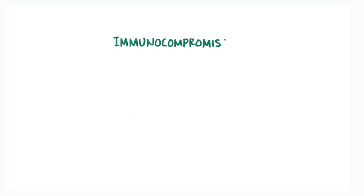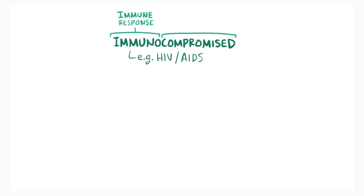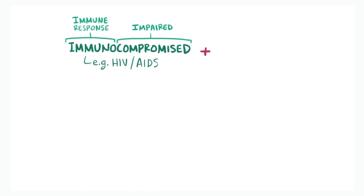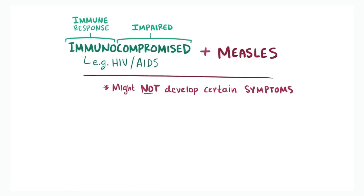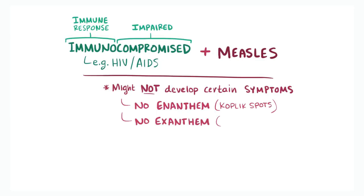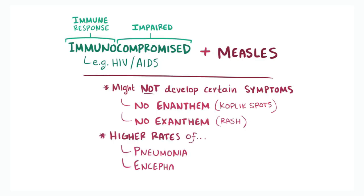For people who are immunocompromised — for example, people with HIV or AIDS — their immune-mediated responses are impaired. If they get measles, they might not develop some symptoms that result from the immune system responding to the virus, like the enanthem or Koplik spots, or the exanthem rash. However, these people also have higher rates of pneumonia and encephalitis, contributing to a higher mortality rate.